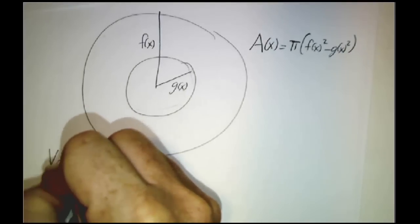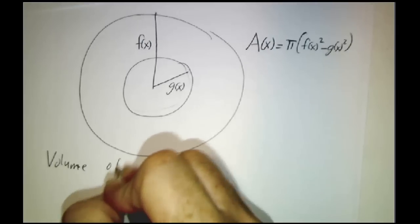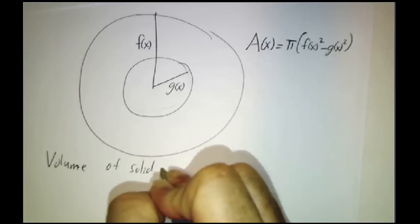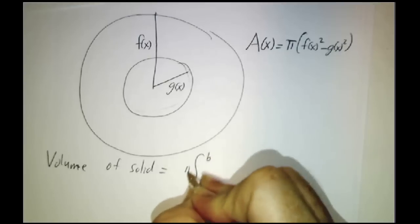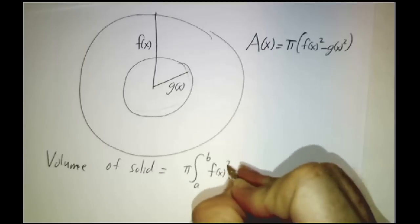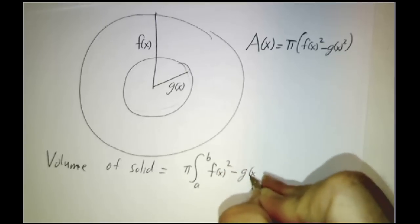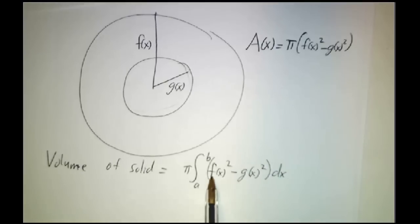So that's the area that we get for each slice. So the volume of the solid is going to be the integral of that. It's the integral from a to b of pi, I'm going to put the pi outside, f of x squared minus g of x squared dx. Not f of x squared, but f of x squared and g of x squared.